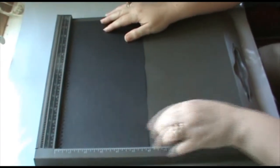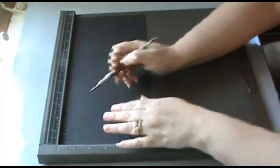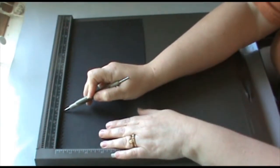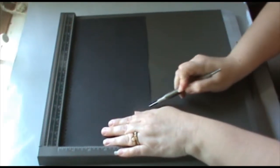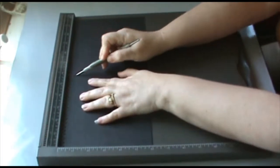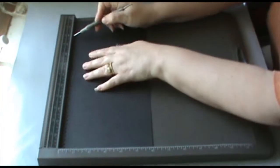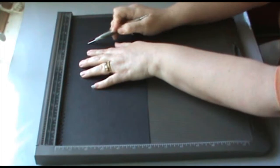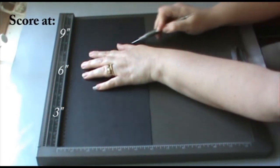The next thing you will do is lay it on your scoreboard and score it at 3 inches, 6 inches, and 9 inches. And that will give you the four panels that you will need for this card.